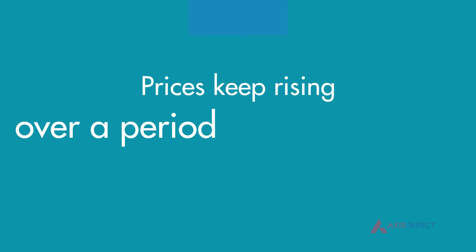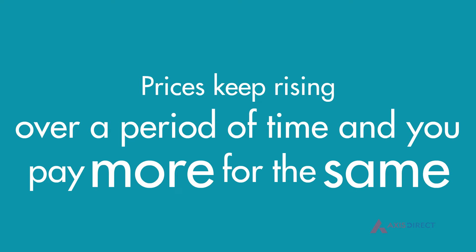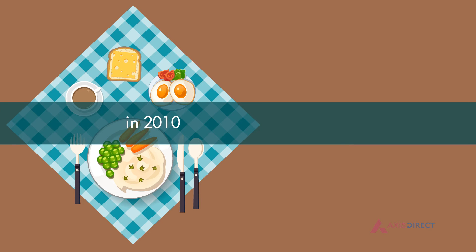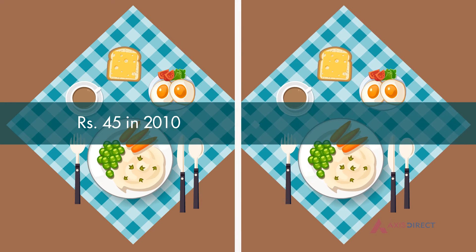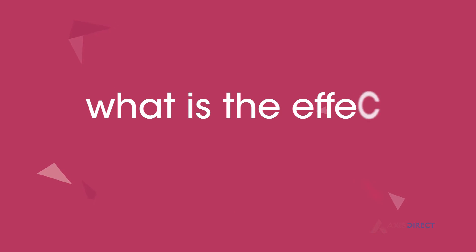Prices keep rising over a period of time and you pay more for the same. Let us understand this by seeing how your breakfast cost has changed over time. In 2010, a breakfast would have cost you rupees 45, but now the same would cost you rupees 75. Such an increase in prices is called inflation.